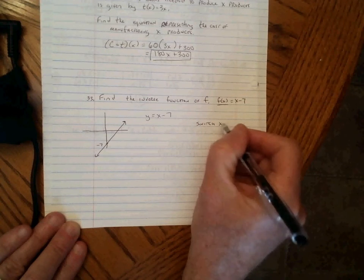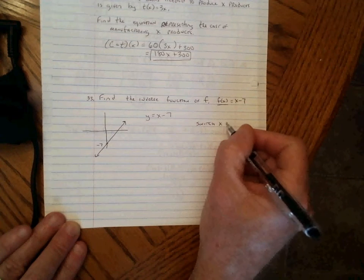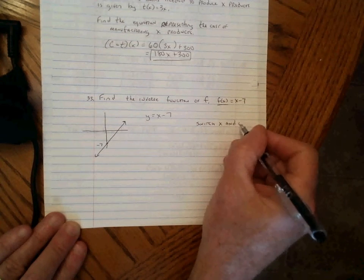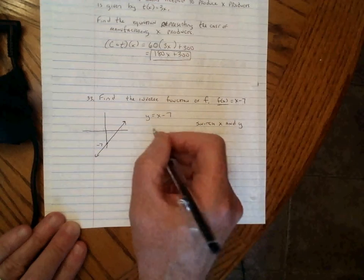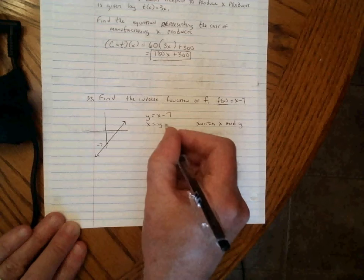Then we switch the X and Y. That means everywhere there was a Y, we replace it with an X. And everywhere there was an X, we replace it with a Y. So I'm going to write X equals Y minus 7.